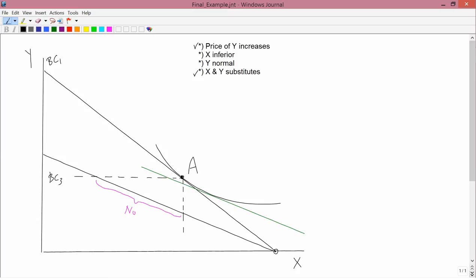So now we have to handle this business about inferior and normal goods. Inferior and normal has to do with income changes. There are no income changes in the graph right now, so you have to draw this green line, the imaginary budget constraint, call it BC2. Remember how it's drawn: the imaginary budget constraint is always drawn parallel to the new budget constraint tangent to the original indifference curve U0.